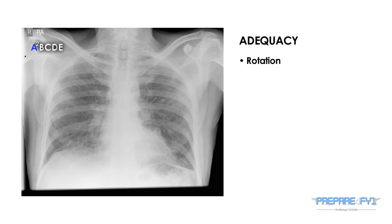First of all we will consider rotation. Look to see if the clavicles are symmetrical around the sternum. This will demonstrate whether the patient was appropriately positioned for the x-ray.